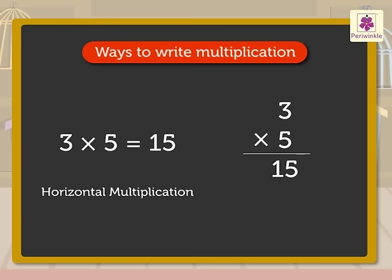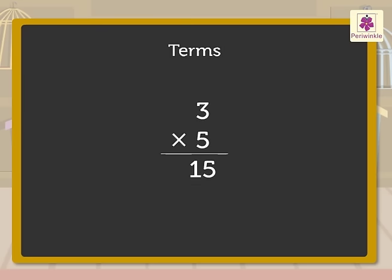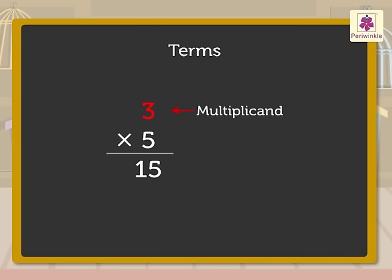Certain terms are also used for the numbers in a multiplication sentence. The number that is multiplied by another number is called the multiplicand. The number by which another number is multiplied is called the multiplier. The number obtained by multiplying two numbers is called the product.